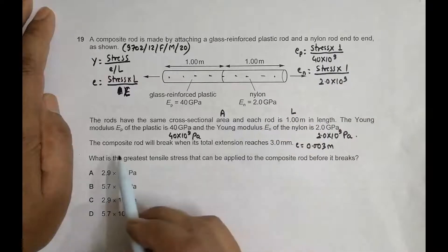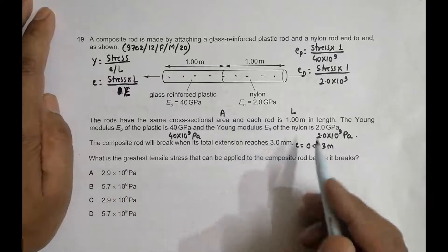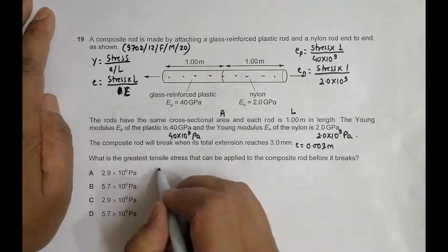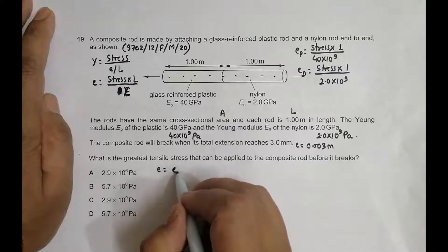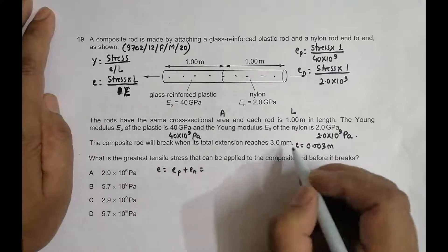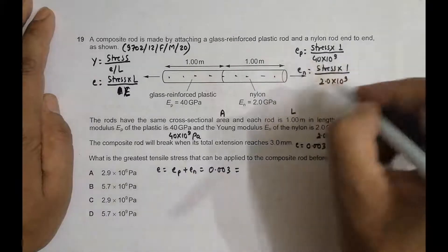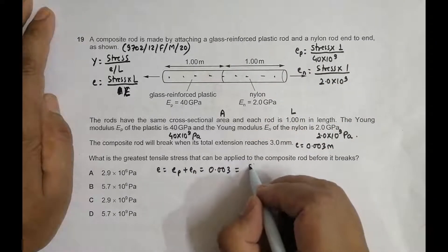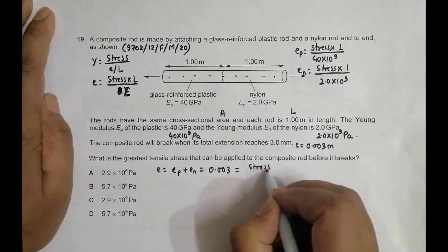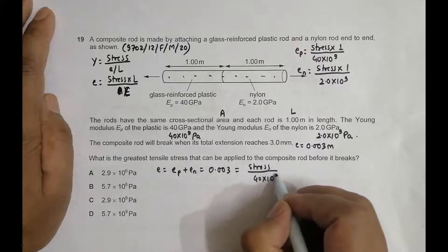The composite rod will break when its total extension reaches 3 mm. This means it breaks when ep + en = 0.003 m. Adding these together gives us stress divided by...